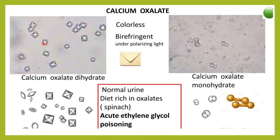To summarize: calcium oxalate is a colorless, birefringent crystal — meaning it is refractile. It exists in envelope shaped form most commonly. It is the most common crystal in urine. There are two forms: monohydrate and dihydrate. The monohydrate form is dumbbell shaped, and the dihydrate form is the envelope shaped crystal.